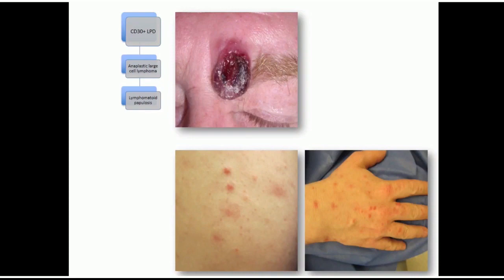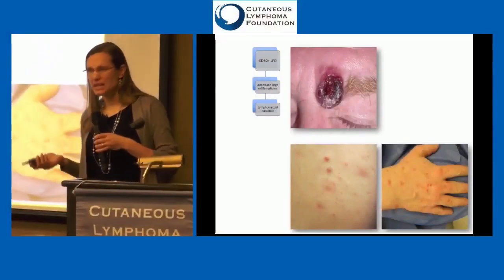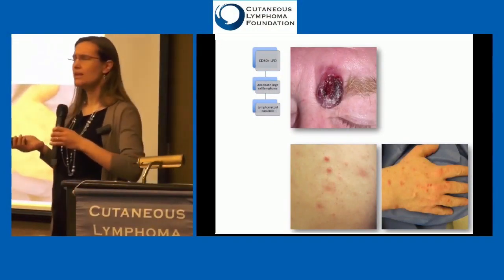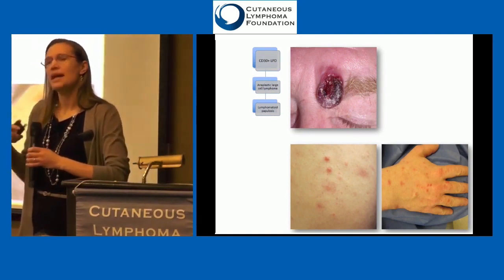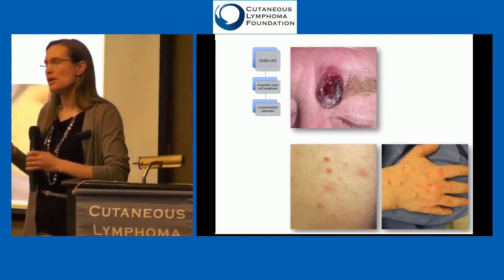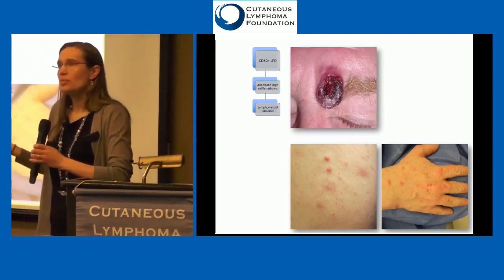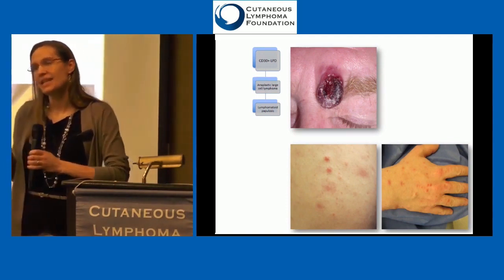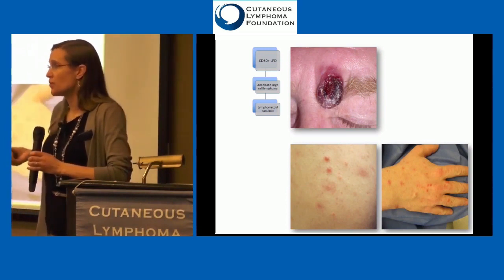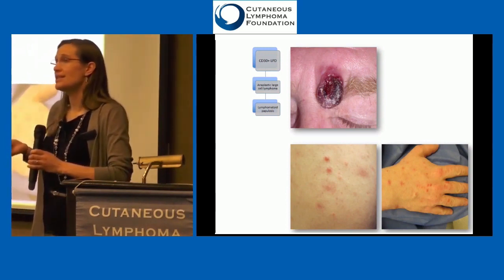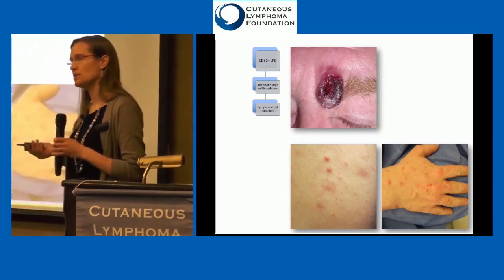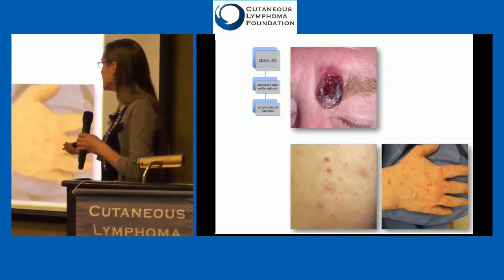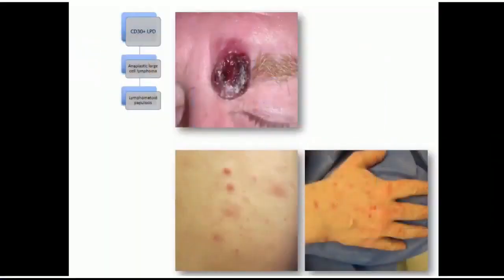Lymphomatoid papulosis looks totally different. People often think it's acne or bug bites for a while. Eventually these little pink bumps pop up, get crusty and scabby, and then heal over, sometimes with a small scar. Lymphomatoid papulosis is technically not lymphoma, but we include it in our lymphoma classification because it's associated with other cutaneous lymphomas.